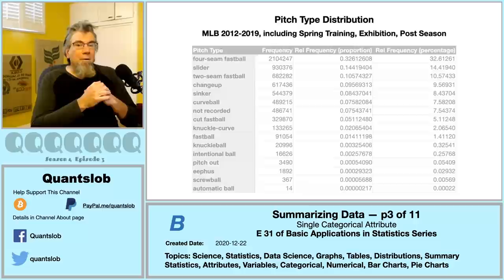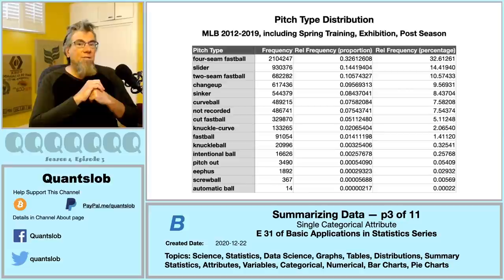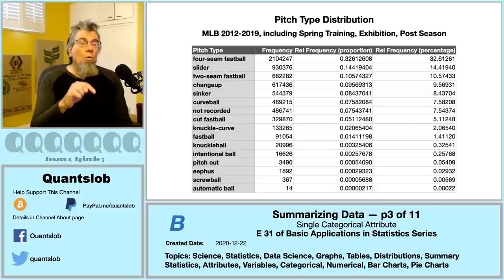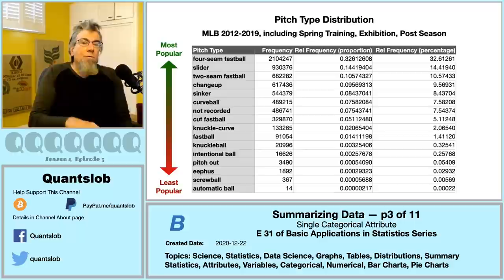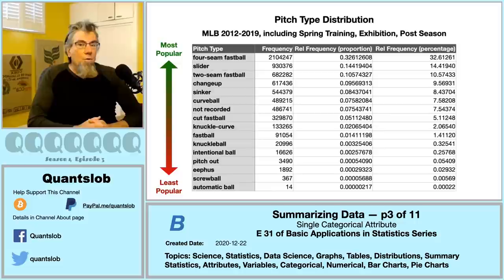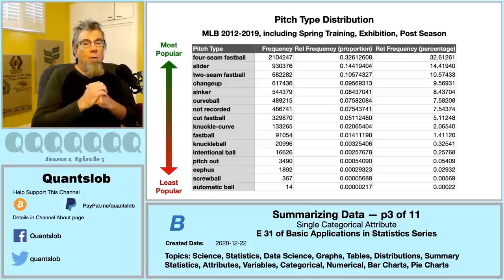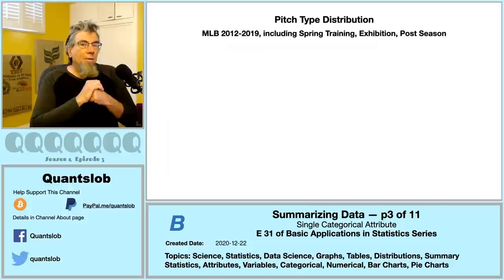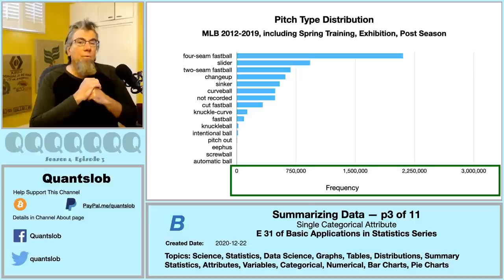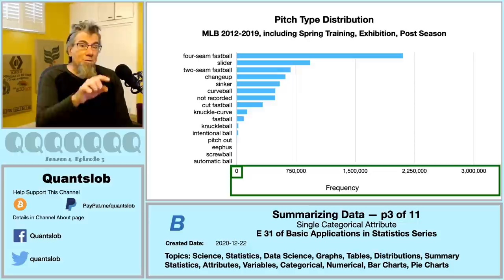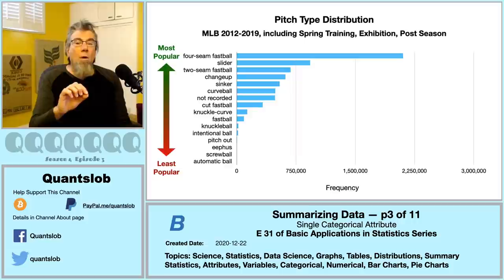For the distribution of pitch type, the table is much busier — here we have 16 categories as opposed to just two. Notice we've placed categories in descending order with respect to popularity — most popular at the top, least popular at the bottom. This makes comparisons easier for the viewer. At a short glance we can see that the four-seam fastball is the most popular, while the screwball is very rare, and the so-called automatic ball is rarer still.